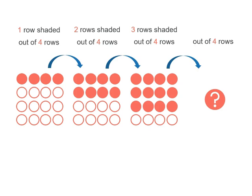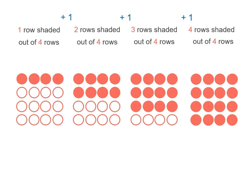Well, since we've increased by 1 each time, we went from 1 to 2, then 2 to 3. 3 plus 1 means 4 rows are shaded out of our 4 rows. So that's what it would look like.